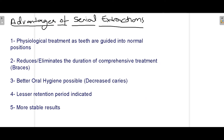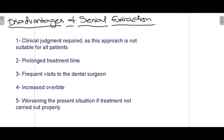There are certain advantages of performing serial extraction. First, the teeth that erupt after extraction of deciduous and some permanent teeth tend to erupt in their normal position, making it a more physiological treatment. Second, the duration of comprehensive treatment may be reduced or eliminated. Third, oral hygiene is better maintained due to decreased risk of caries. Fourth, there is a lesser retention period required, and finally, the results are more stable.